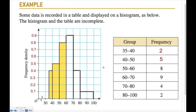For the 60 to 70 group with a frequency of 9, the frequency density is 9 divided by 10, which is 0.9. The next one is 4 divided by 10, which is 0.4, and the last one is 2 divided by 20, which is 0.1. Now I can finish drawing the rest of the histogram.